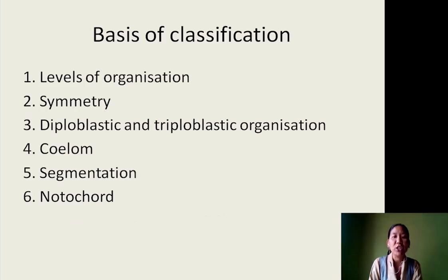Basis of classification. The first is level of organization. Second, body symmetry. Third, diploblastic and triploblastic organization. Fourth, coelom. Fifth, segmentation. Sixth, notochord. Based on these six criteria or features, the animal kingdom is classified into various phyla.